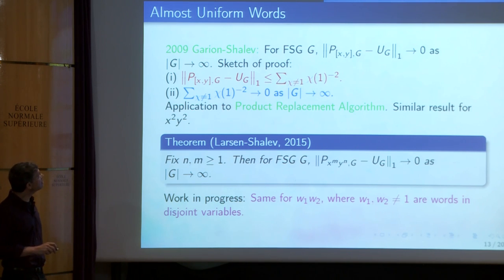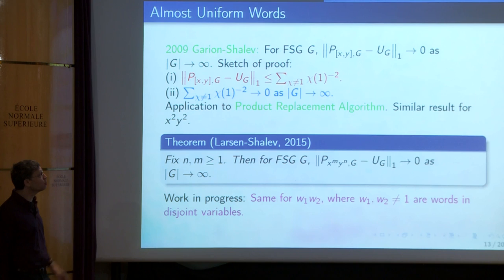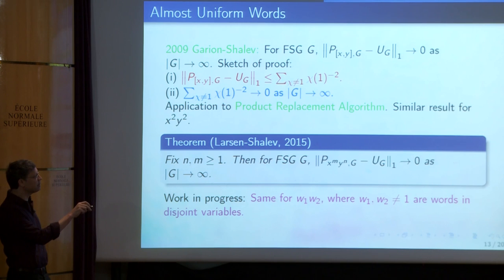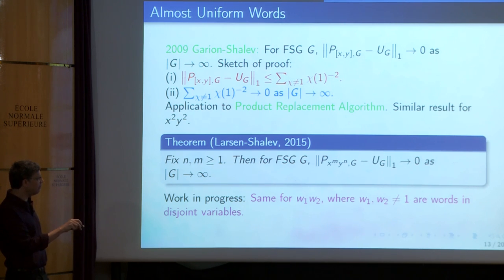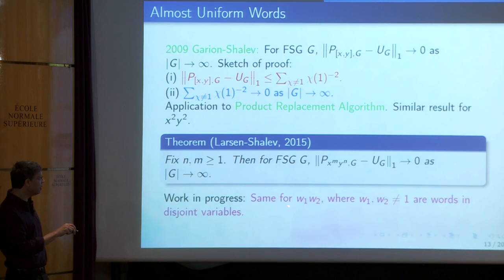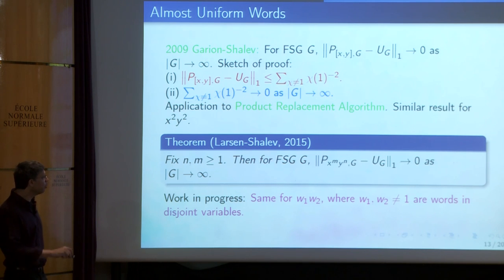Some words are nice in that the distribution is almost uniform — it tends to the uniform distribution as the order of the group tends to infinity. For example, the commutator word is almost uniform. And we proved that if w_1, w_2 are words in disjoint variables, then their product is also almost uniform.